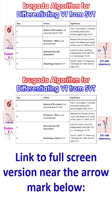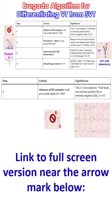The Brugada algorithm is for differentiation: is this ventricular tachycardia or supraventricular tachycardia with aberrancy, like a bundle branch block? Follow these 4 steps in order. If the answer is yes to any step, the diagnosis is ventricular tachycardia.